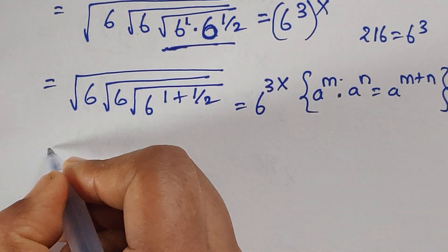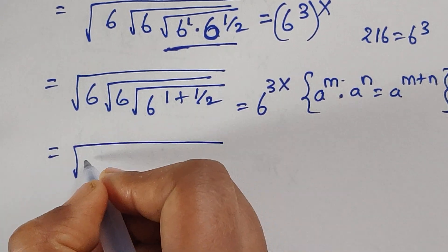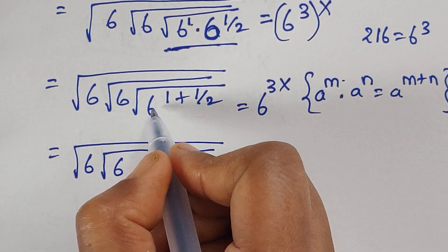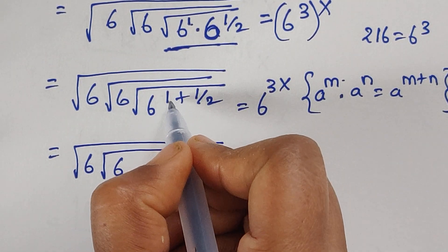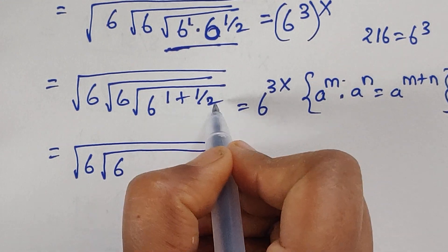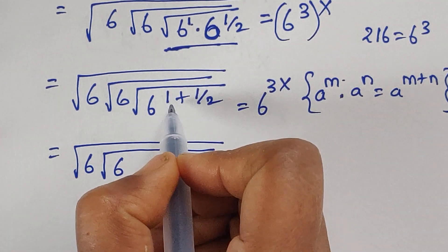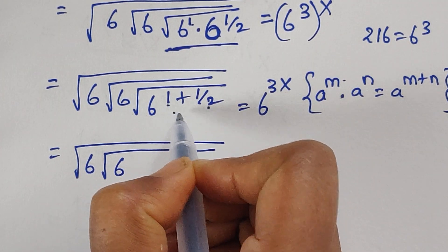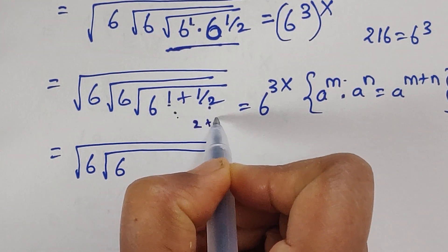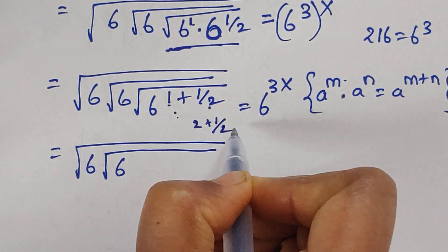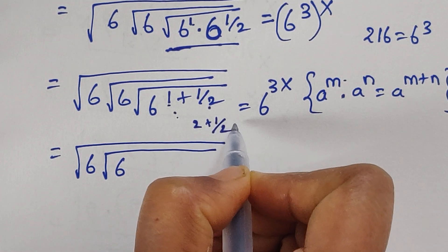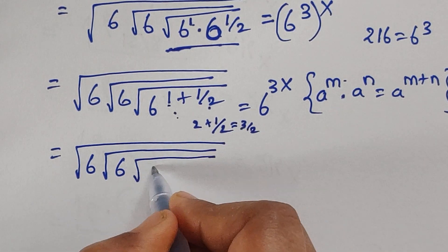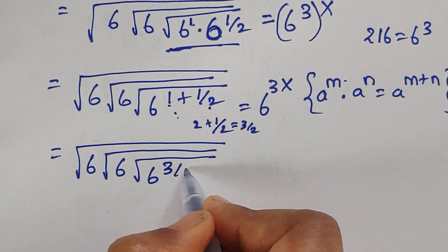Continuing with square root of 6 times square root of 6: 1 plus 1 by 2. Multiplying these two terms: 1 times 2 gives 2, then 2 plus 1 divided by 2 gives 3 by 2. So we get square root of 6 to the power of 3 by 2, which equals 6 to the power of 3 by 2.